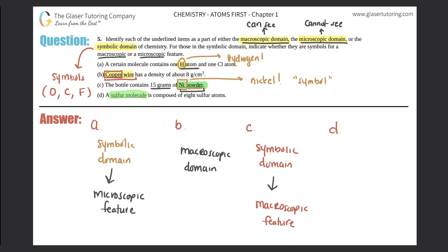D: a sulfur molecule is composed of eight sulfur atoms. They did not use a symbol here — they wrote out the whole word 'sulfur' — so this is not part of the symbolic domain. Now we determine whether it's macroscopic or microscopic. Can we see a sulfur molecule with our eye? Definitely not — we can't see those molecules or atoms — so this would be part of the microscopic domain.